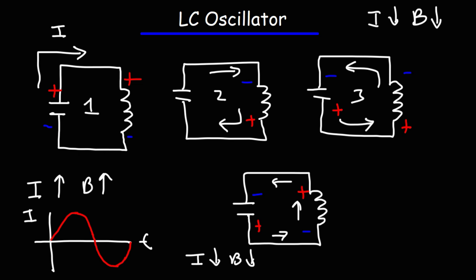And that's the basic idea behind how the LC oscillator circuit works. Energy is constantly being transferred back and forth from the capacitor to the inductor, and vice versa. While one element is being charged, the other is being discharged.